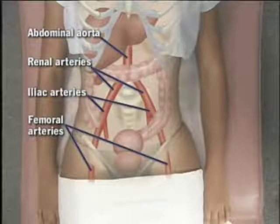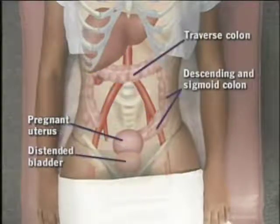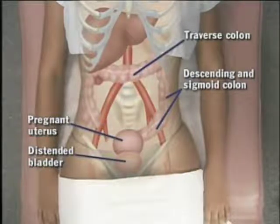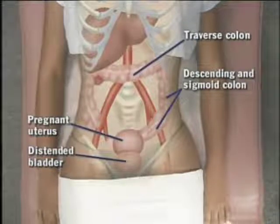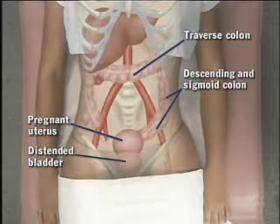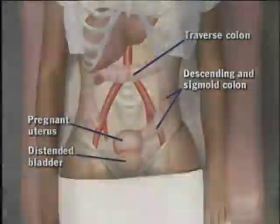The renal arteries branch off the aorta in the epigastric area. The intestines fill much of the abdomen; the sigmoid colon and portions of the transverse and descending colon may be palpable as tubular masses. Except for a pregnant or gravid uterus or a distended bladder, normal pelvic organs are not detectable through the abdominal wall.